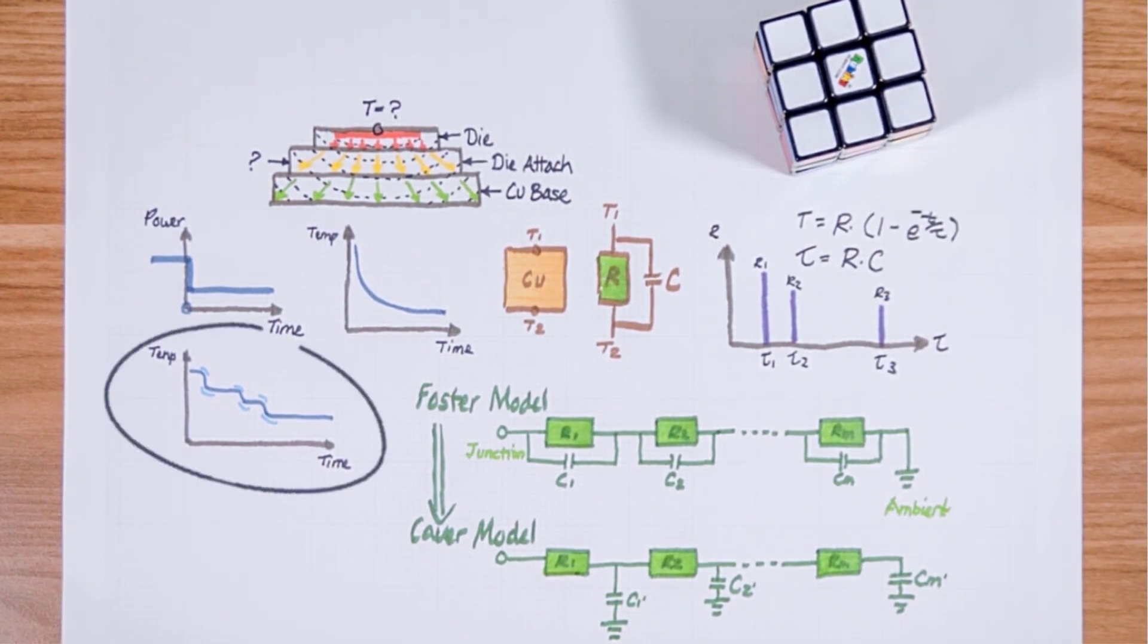To recap we measure this curve then we break down the curve to a number of r's and c's. Then we do a mathematical transformation from a so-called Foster type thermal model to a ladder-shaped Cauer model.